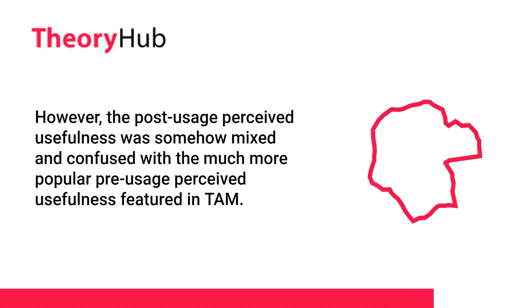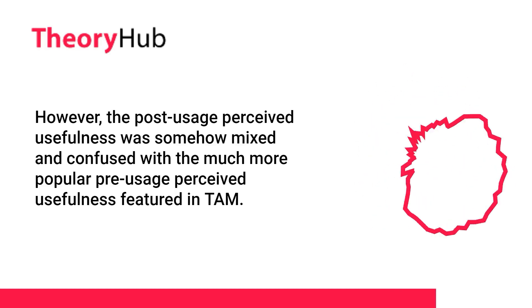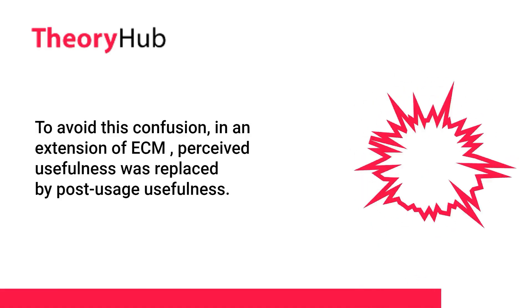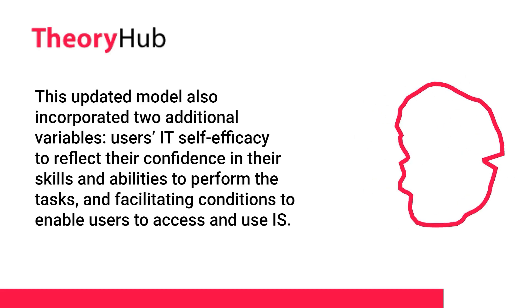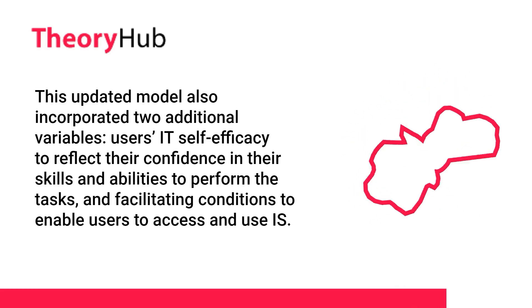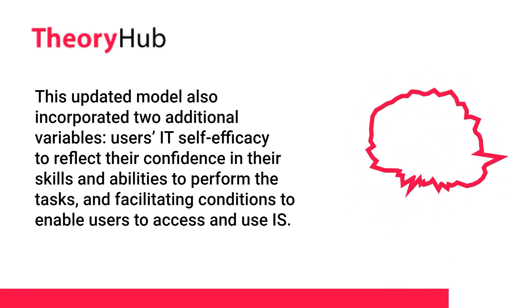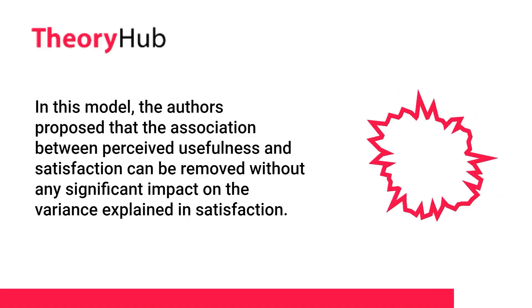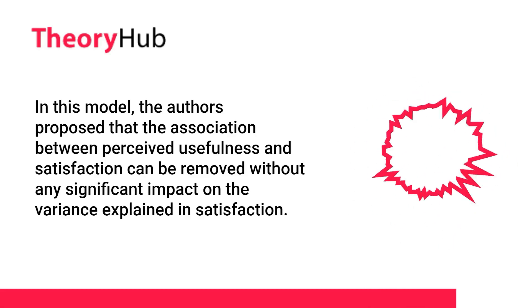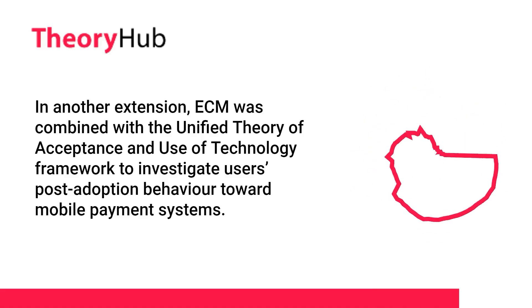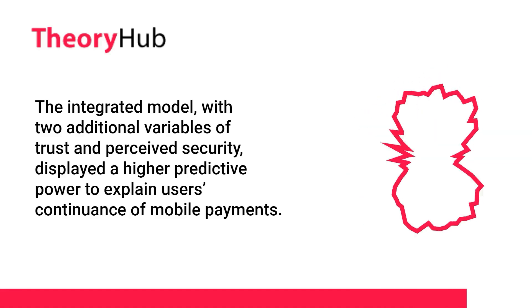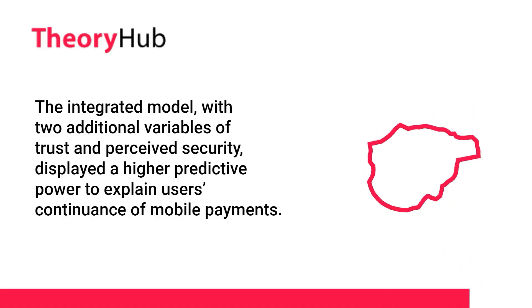The post-usage perceived usefulness in ECM was sometimes confused with the pre-usage perceived usefulness featured in TAM. To avoid this confusion, in an extension of ECM, perceived usefulness was replaced by post-usage usefulness. This updated model also incorporated two additional variables: users' IT self-efficacy, to reflect their confidence in skills and abilities to perform tasks, and facilitating conditions to enable users to access and use IS. In another extension, ECM was combined with the Unified Theory of Acceptance and Use of Technology (UTAUT) framework to investigate users' post-adoption behavior toward mobile payment systems. The integrated model, with two additional variables of trust and perceived security, displayed higher predictive power to explain users' continuance of mobile payments.